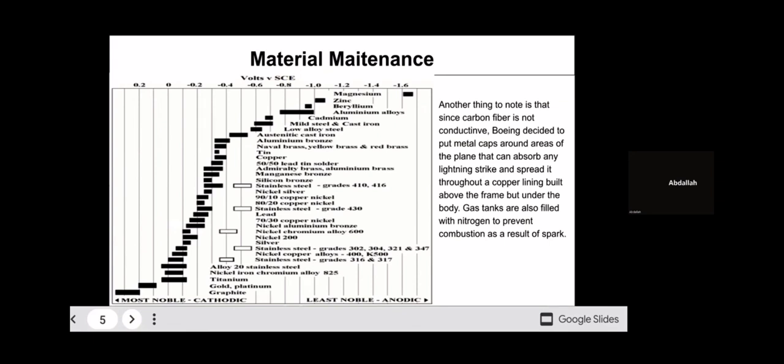Another small thing that was done for material maintenance is since carbon fiber is not conductive like traditional aluminum bodied airplanes, Boeing put metal rivets in with caps on them, that would conduct any electricity from lightning strikes and run them through a copper lining that was above the titanium frame but under the carbon fiber body. Gas tanks are also filled with nitrogen gas to prevent combustion as a result of a little spark in case lightning is strong enough to spark on the body. The cap on top of the rivets and the copper lining were later removed for cost reasons but otherwise the Boeing 787 maintains all these technologies.